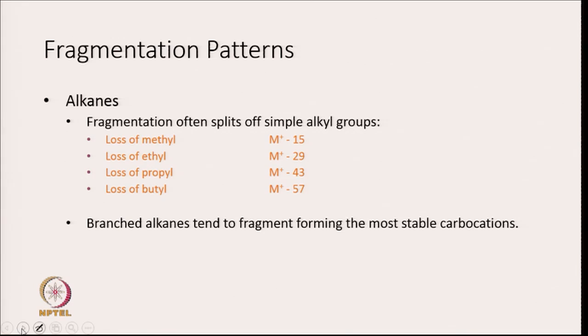In the mass spectrum of an alkane, the fragmentation often splits off simple alkyl groups — for example, loss of methyl group, ethyl group, propyl group, or butyl group. Peaks will be obtained at molecular weight minus 15, M+ minus 29, M+ minus 43, and M+ minus 57. So the peaks will be 15, 29, 43, and 57 units smaller than the molecular weight.